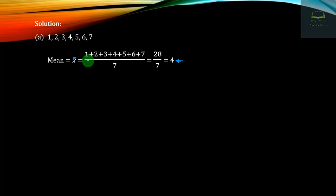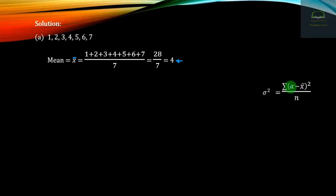The variance sigma squared is the sum of (x minus x-bar) squared divided by n. The standard deviation is derived from this variance. The variance formula remains consistent: sigma squared equals summation (x minus x-bar) squared divided by n.